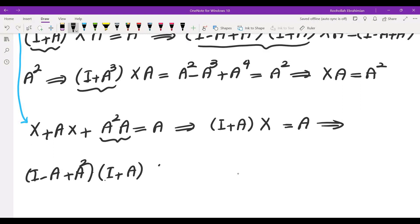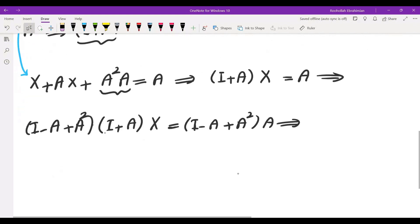So I minus A plus A squared times A - the left side becomes I plus A cubed, which is identity because A cubed is 0, and the right side becomes A minus A squared plus A cubed.